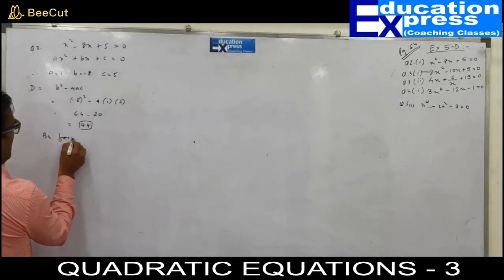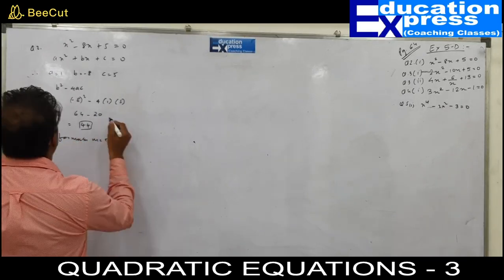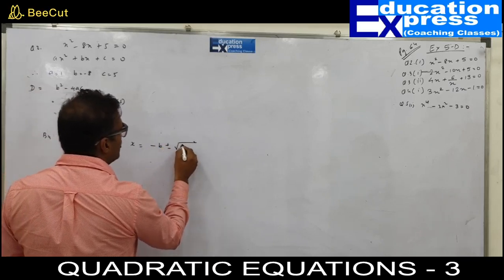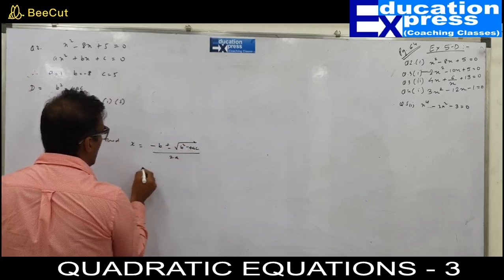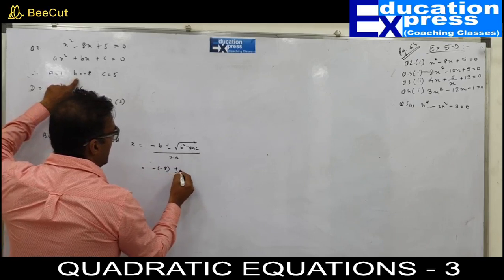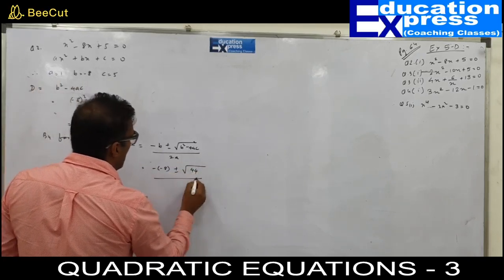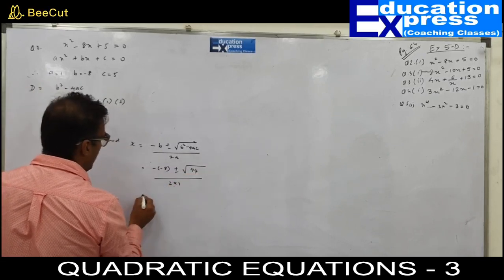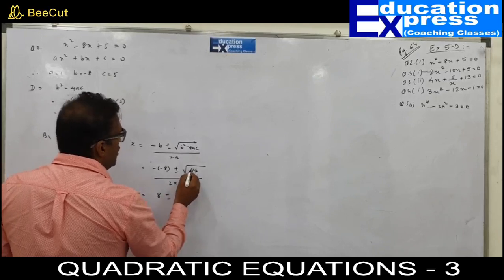By formula method, we have to find the value of x. The formula is: x equals minus b plus or minus square root of b squared minus 4ac, the whole upon 2a. So minus of minus 8, plus or minus square root of 44, upon 2 into 1. This simplifies to 8 plus or minus root 44.